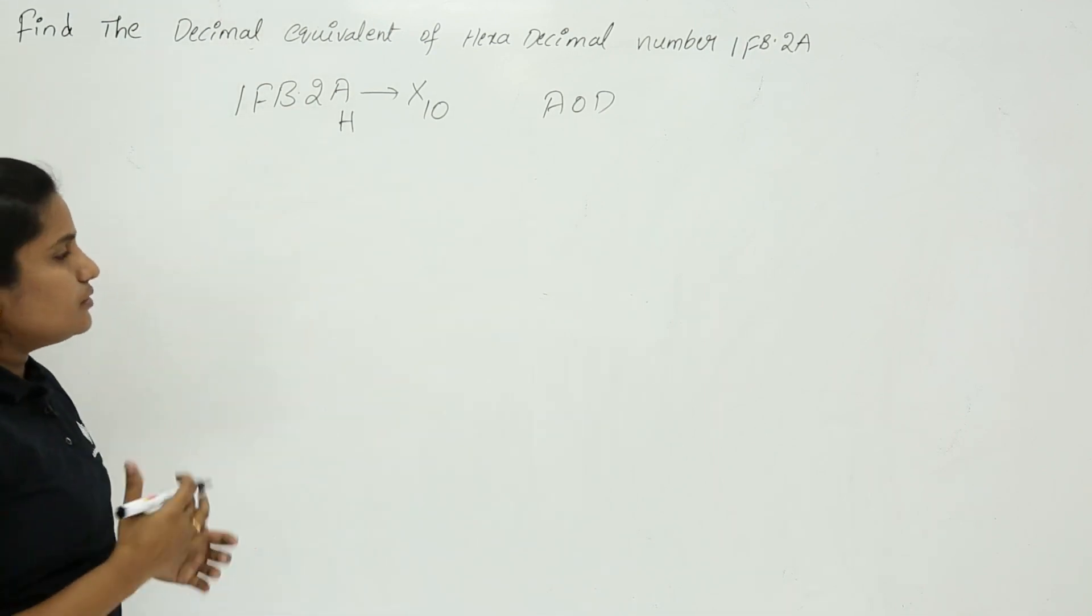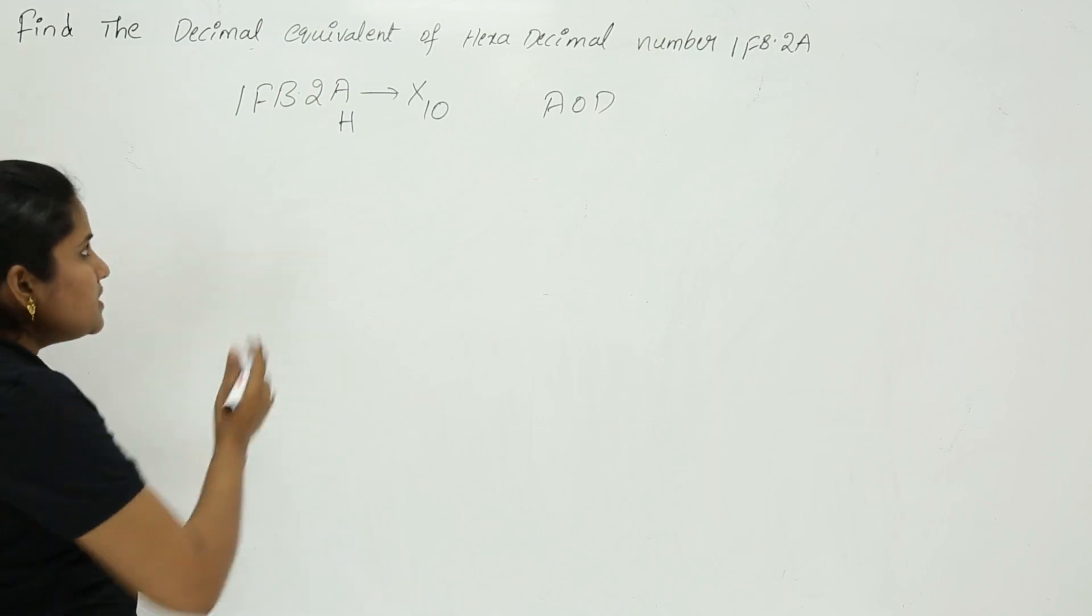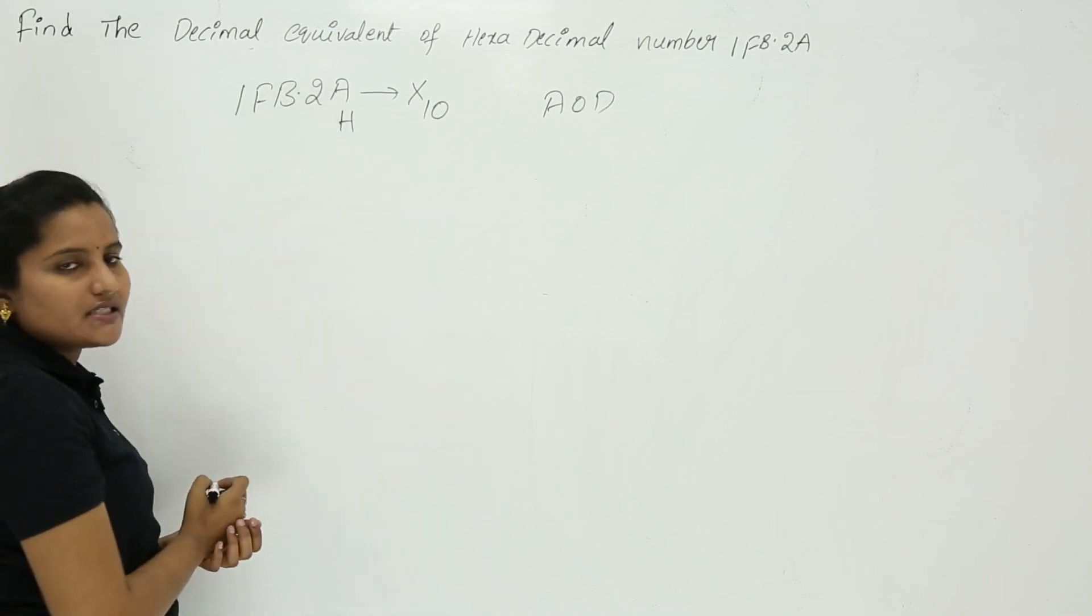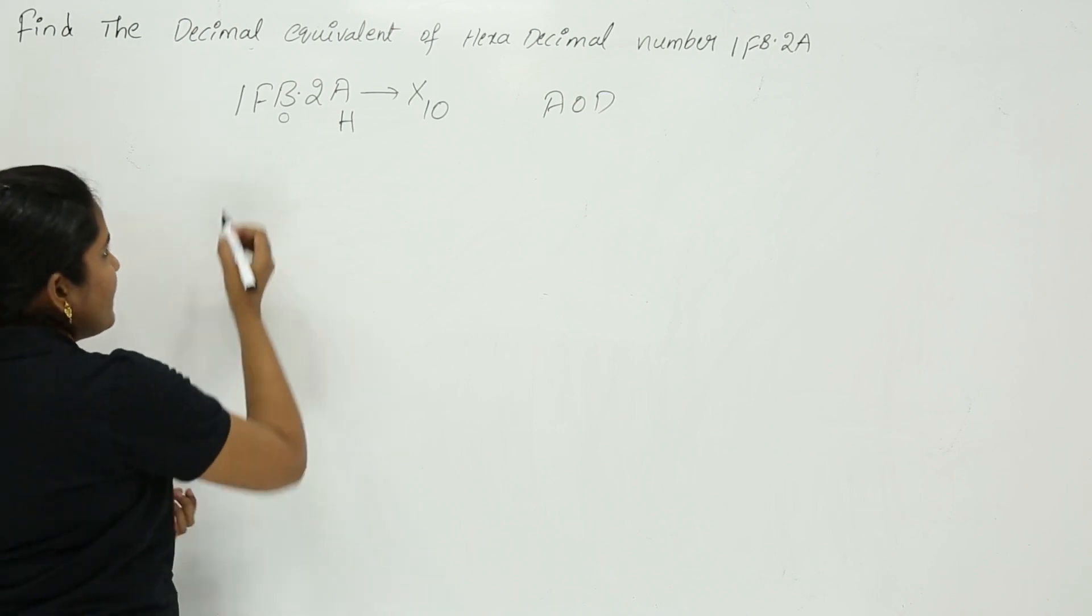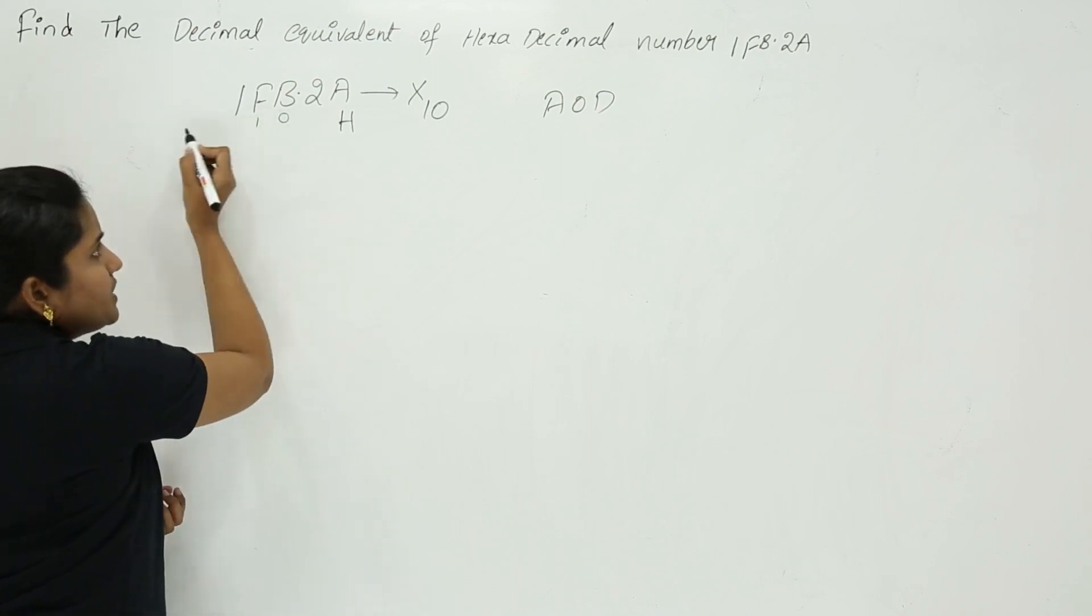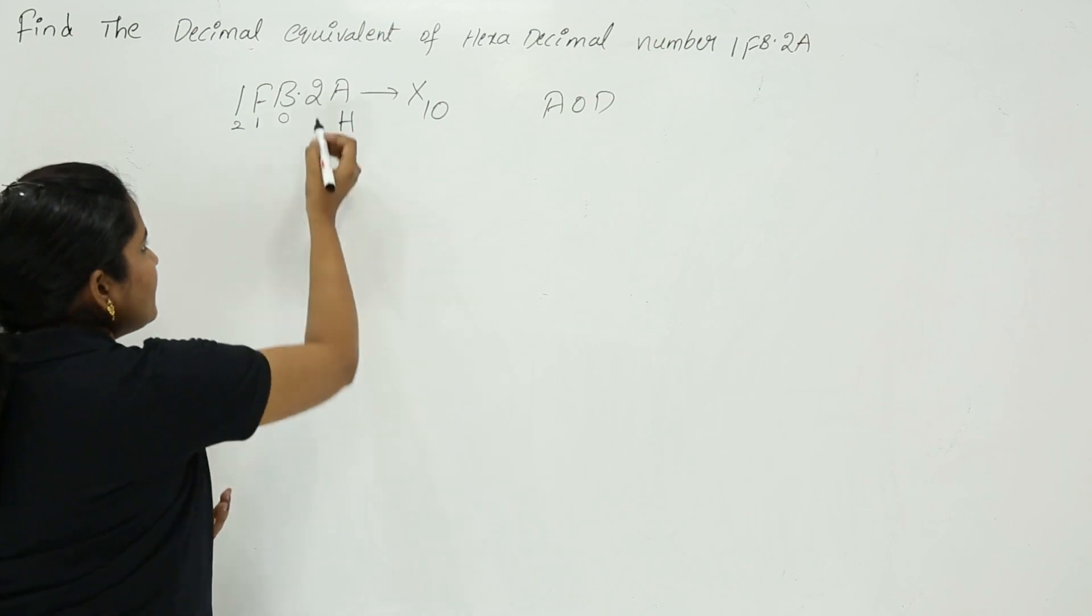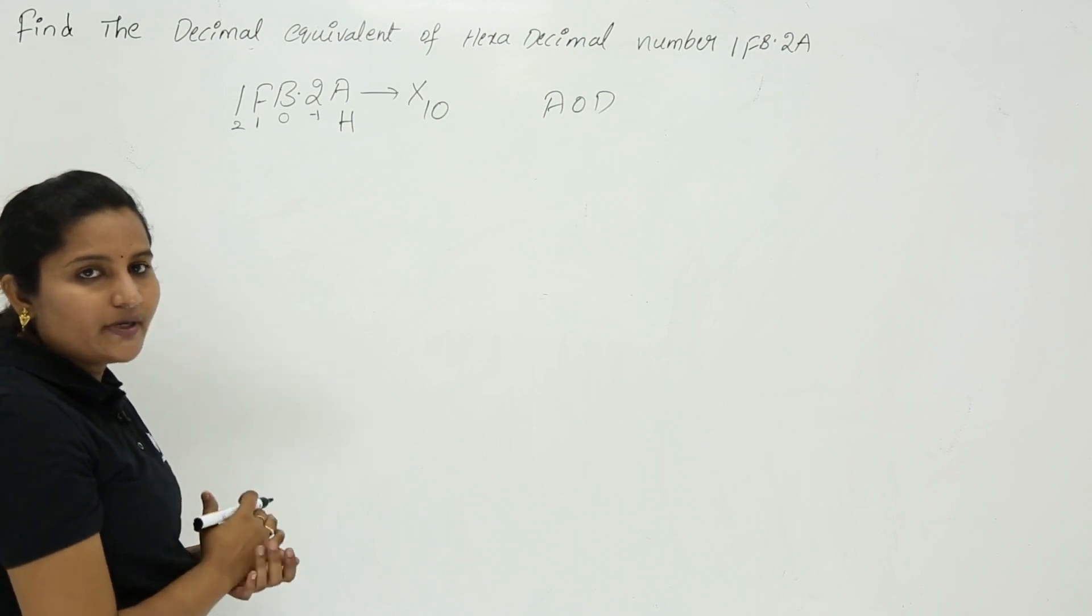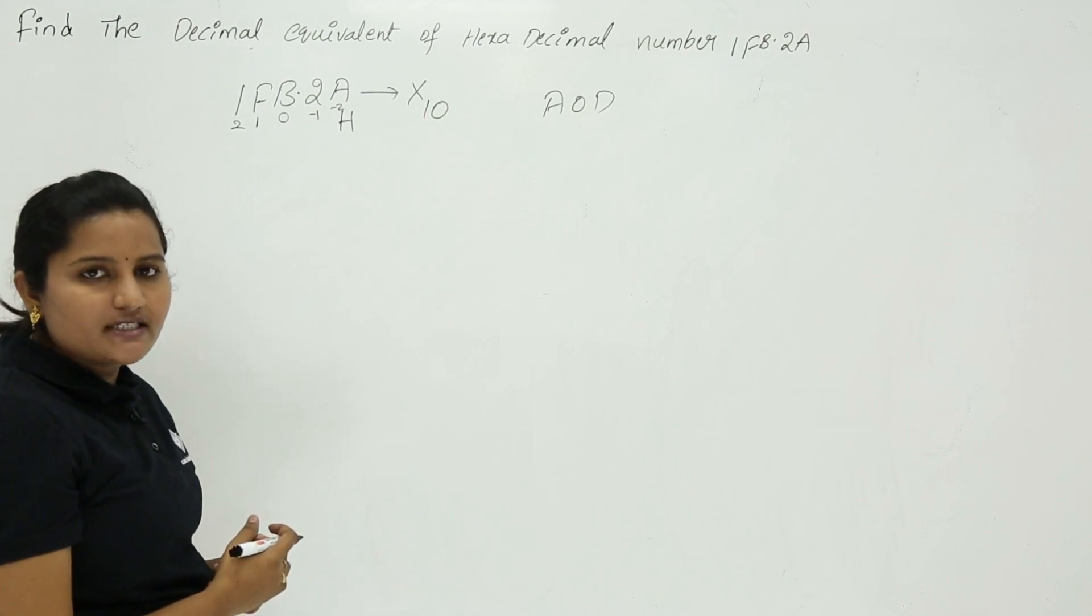To do that multiplication, you need place values of each and every digit of the source number system. Here I am taking the place values for this hexadecimal number. This point before digit starts with 0 place value. So B is taking 0 place value and it is going to increase to the left side - that means 1, 2, and so on. And this 2 is having negative place values. That means point after digits always have negative place values - that is minus 1 and minus 2, and so on.